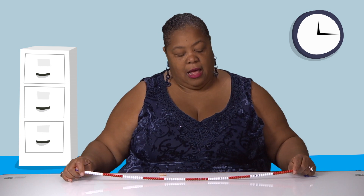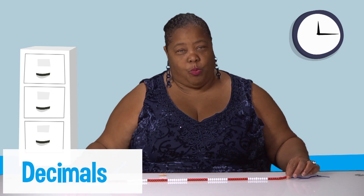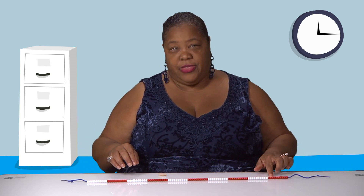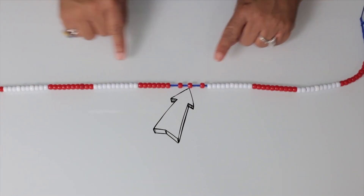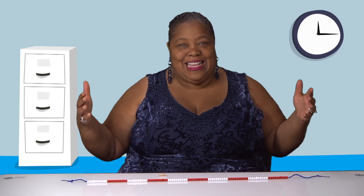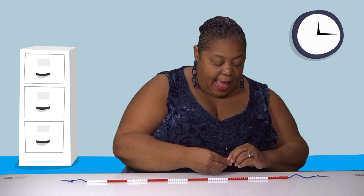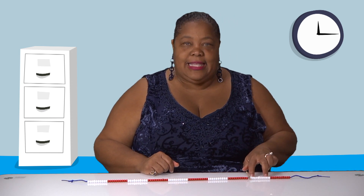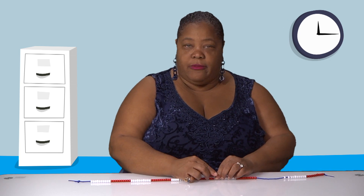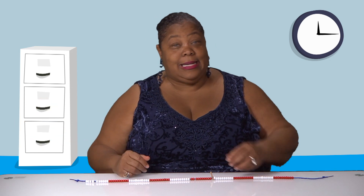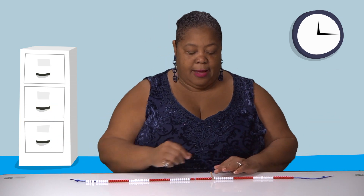Now for the fourth grade content: in fourth grade you start dealing with decimals, and this is wonderful for decimals. The whole beaded number line is the whole, each group of ten is tenths, and each individual bead is hundredths. So you have hundredths, tenths, and one whole. When looking at equivalent decimals, kids can actually see — people use money a lot but money is very abstract. With the number line, kids can see: if I have two tenths, I have twenty hundredths. If I have four tenths, I have forty hundredths. It becomes very easy to see.